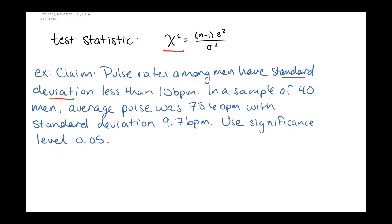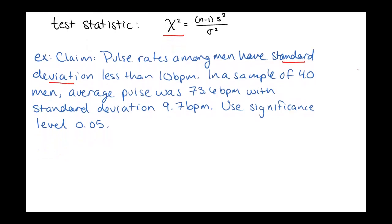So in order to do that, we take a sample. In this case, of 40 men, so we have an n value of 40. Their average pulse rate was 73.6 beats per minute, so that is the average of the sample. And then the standard deviation of the sample is 9.7 beats per minute.